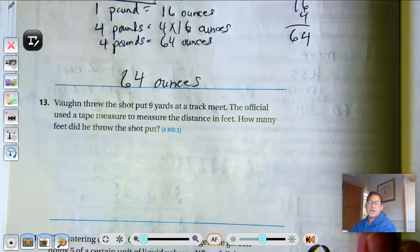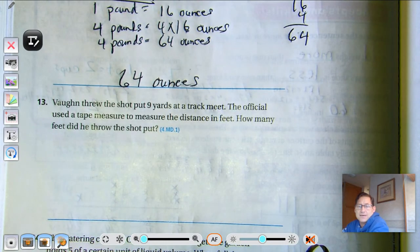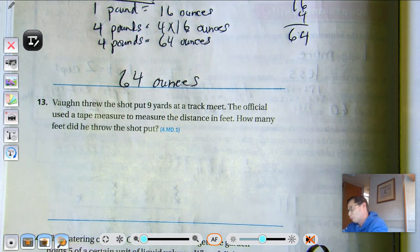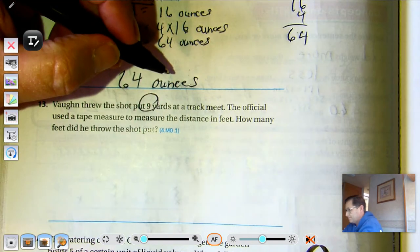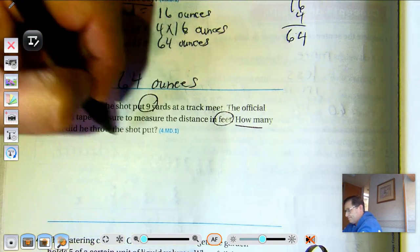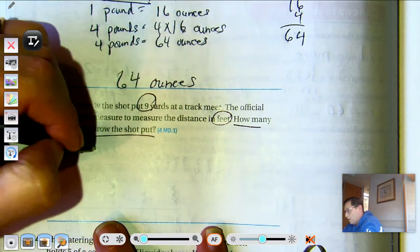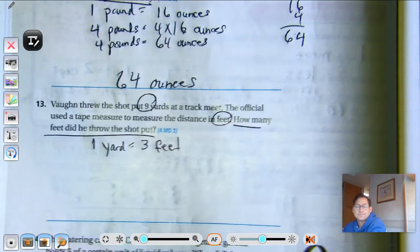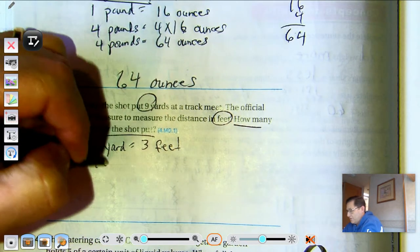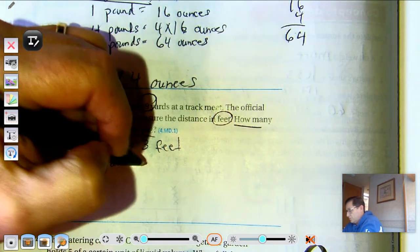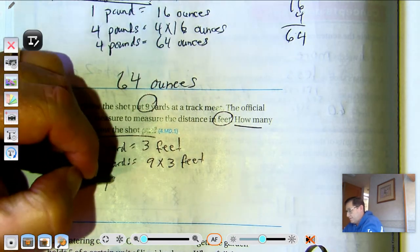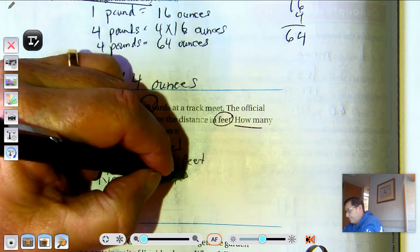Von threw the shot put 9 yards at a track meet. The official used tape measures to measure the distance in feet. How many feet did he throw the shot put? 1 yard is 3 feet. 9 yards equals 9 sets of 3 feet, which equals 27 feet.